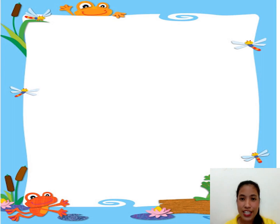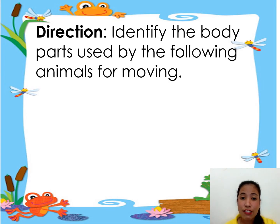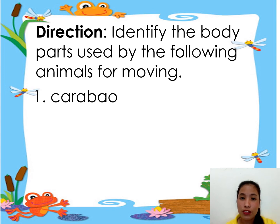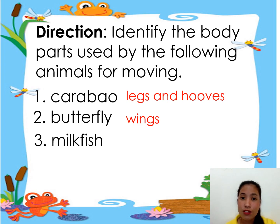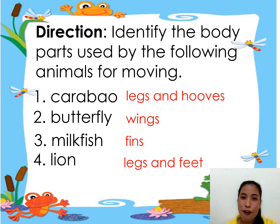To check if you understand the lesson, let's have this activity: identify the body parts used by the following animals for moving. A carabao — it uses its legs and hooves. How about a butterfly? It uses its wings. How about the milkfish? It uses its fins. Next, a lion — it uses its legs and feet. How about a parrot? It uses its wings also.